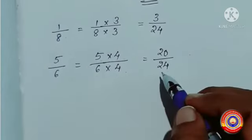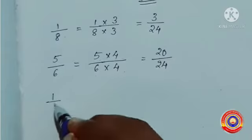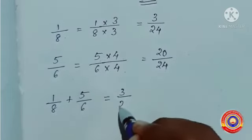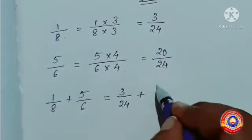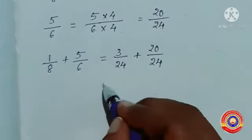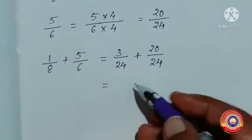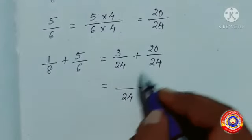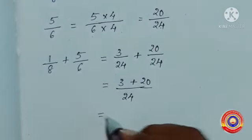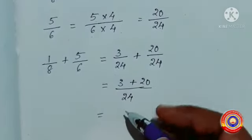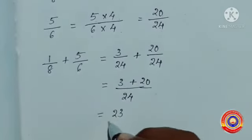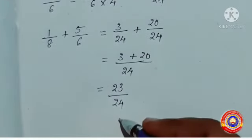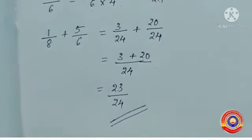Now we have the like fractions of 1 by 8 and 5 by 6. So 1 by 8 plus 5 by 6 is equal to 3 by 24 plus 20 by 24. Write the denominator as it is, that is 24. Then add the numerators: 3 plus 20 is equal to 23. Write the denominator 24. Then 1 by 8 plus 5 by 6 is equal to 23 by 24. Is it clear for you?